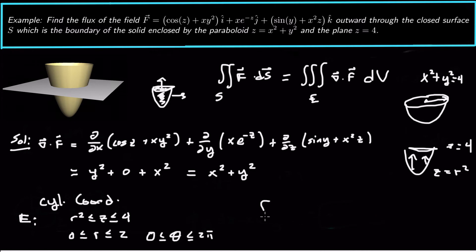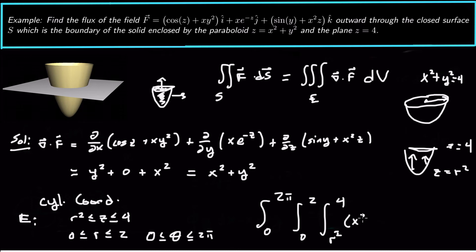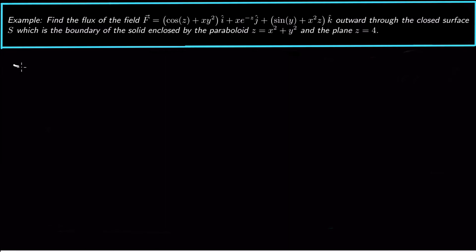So our triple integral is going to be the integral from 0 to 2π, integral from 0 to 2, integral from r² to 4, and then our integrand is x² + y², times r, dz dr dθ. Now all we need to do is convert the integrand to cylindrical coordinates and then integrate.